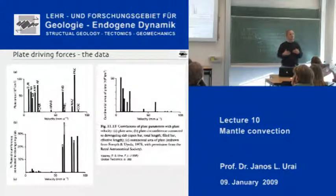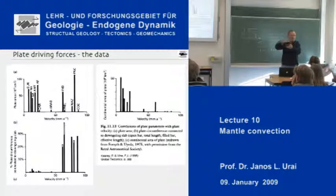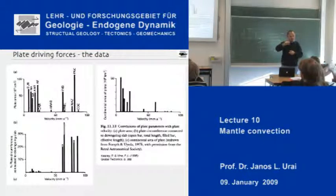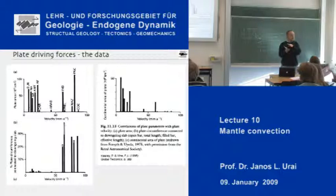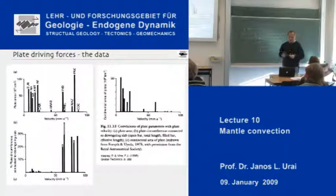Large plates tend to be slow, and that is related to the thermal structure. Maybe cold continents are better stuck to the underlying mantle — maybe there is better coupling between the mantle and the plate. That is another argument which is in the classic textbook on plate tectonics.